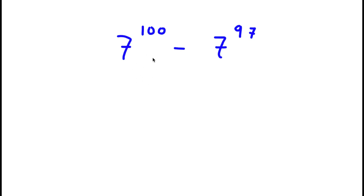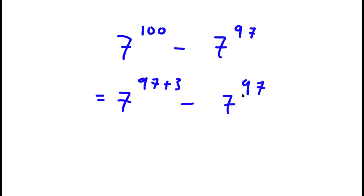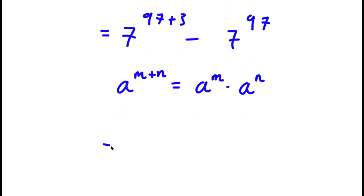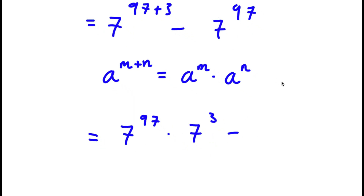Now I have the problem 7 to the power of 100 minus 7 to the power of 97, and I want to calculate this without a calculator. To solve this, I'm going to rewrite 7 to the power of 100 as 7 to the power of 97 plus 3. So now I have 7 to the power of 97 plus 3, minus 7 to the power of 97. Using the exponent property, 7 to the power of 97 plus 3 equals 7 to the power of 97 times 7 to the power of 3, then minus 7 to the power of 97.